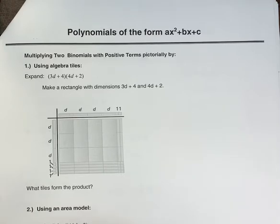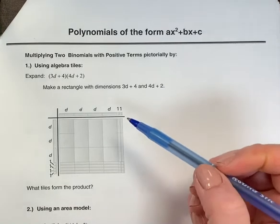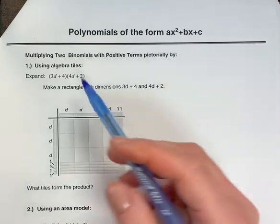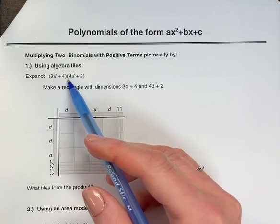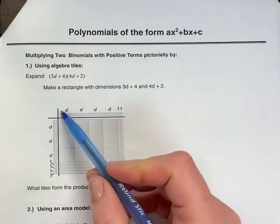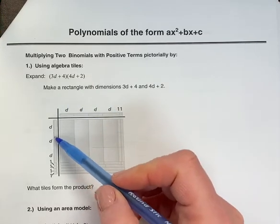When we're multiplying two binomials with positive terms using algebra tiles, let's look at how we can figure out what the product of the factors are. So if we said expand 3d plus 4 times 4d plus 2, you're going to make a rectangle with these dimensions. So we have 3d plus 4 along here.